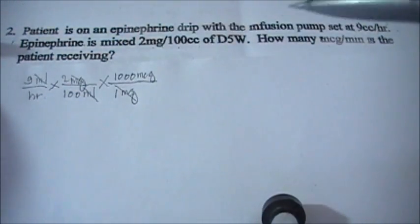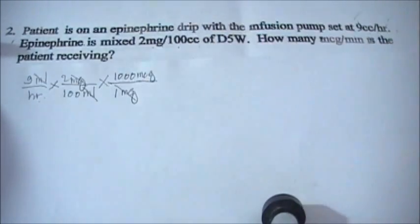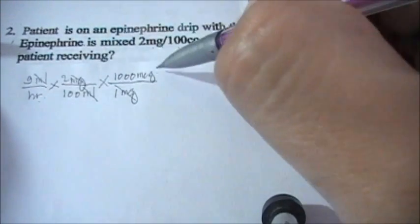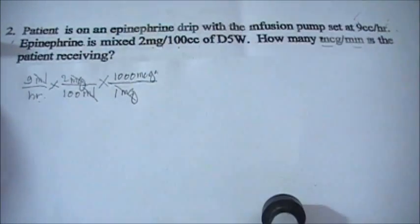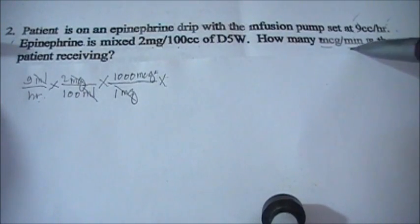And now you want to cancel hour. By the way, the one that we're looking for is microgram per minute, so we're almost done in our solution. So microgram, we got microgram already. Okay, now we just have to produce minutes, which is the second one as the denominator.